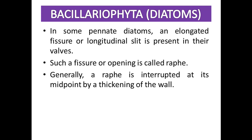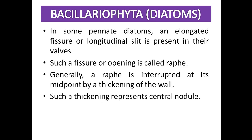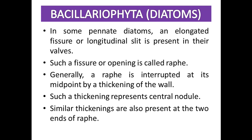The raphe is interrupted at its midpoint by a thickening called the central node. Similar thickenings are also present at the ends of the raphe, as can be seen in the diagram.